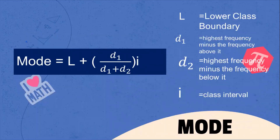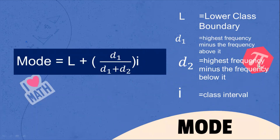What is the formula for Mode Group Data? The formula is: Mode = L + (D₁ / (D₁ + D₂)) × I. Where L is the lower class boundary, D₁ is the highest frequency minus the frequency above it, D₂ is the highest frequency minus the frequency below it, and I is the class interval.